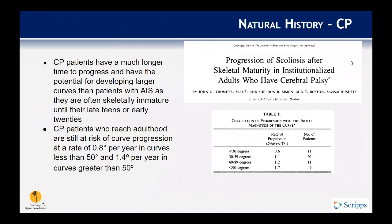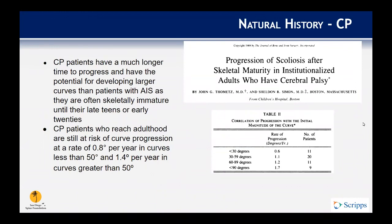Another classic paper looked at the natural history of cerebral palsy scoliosis in untreated patients. CP patients have a much longer time to progress and potential for developing larger curves than patients with AIS, as they are often skeletally immature until the late teens or early 20s. CP patients who reach adulthood are still at risk of curve progression — about 1 degree per year in curves less than 50 degrees and 1.4 degrees per year in curves greater than 50 degrees.